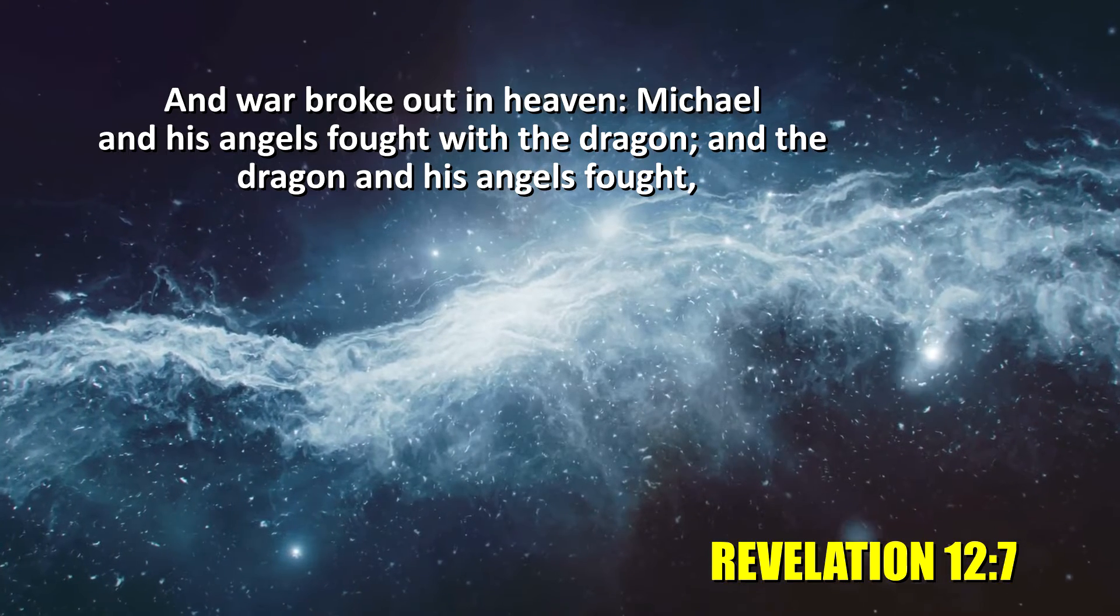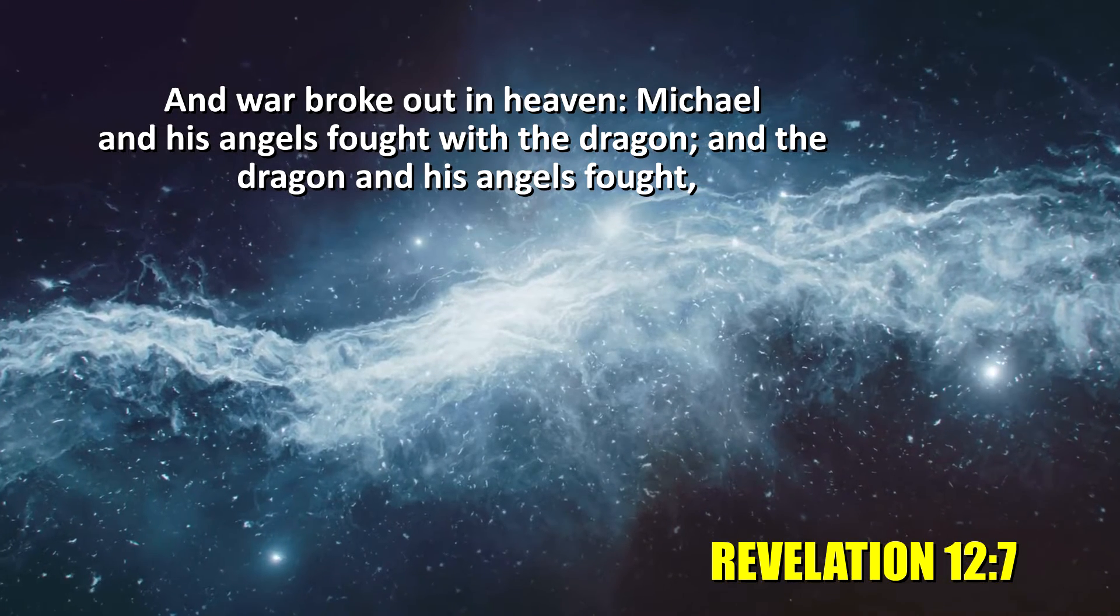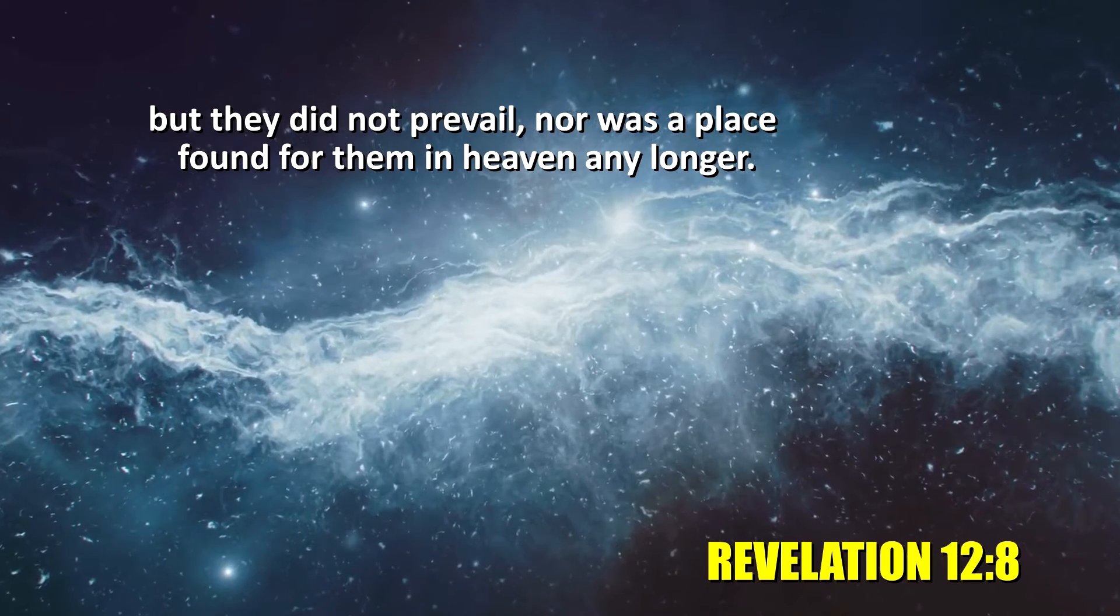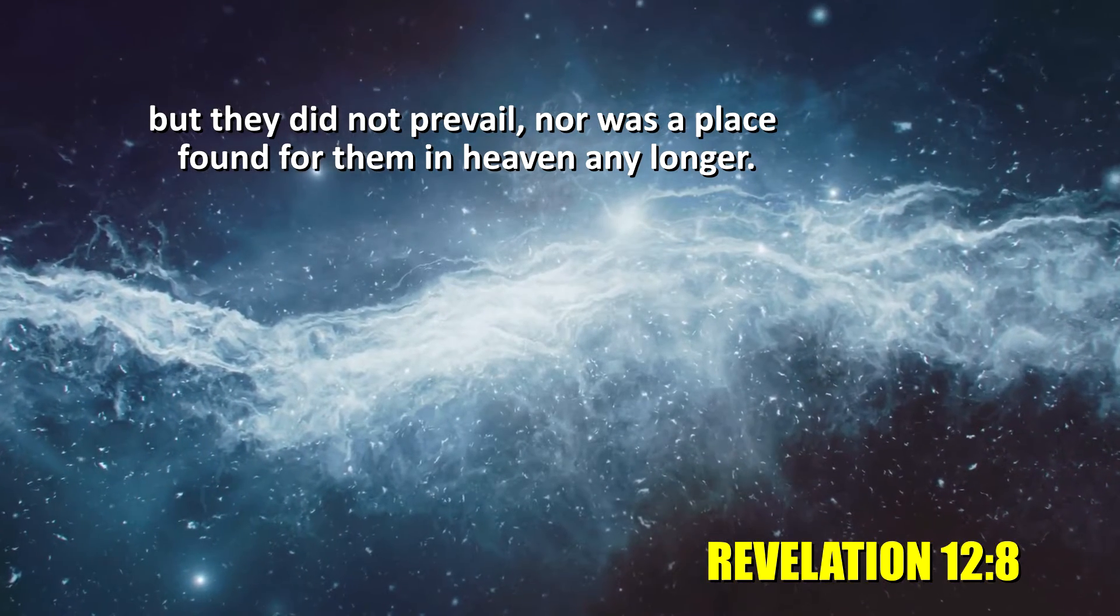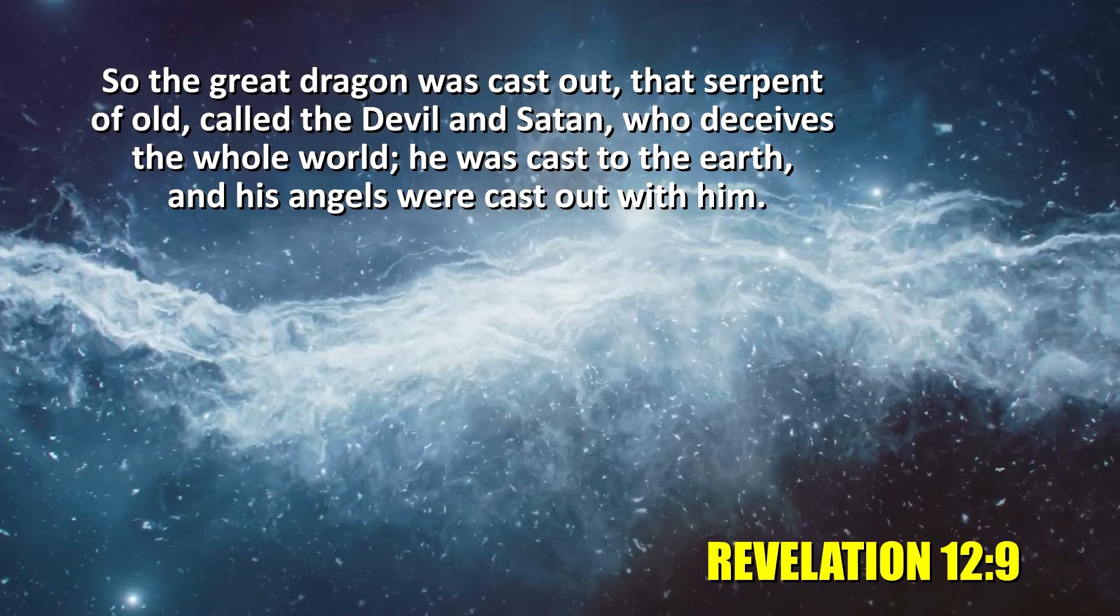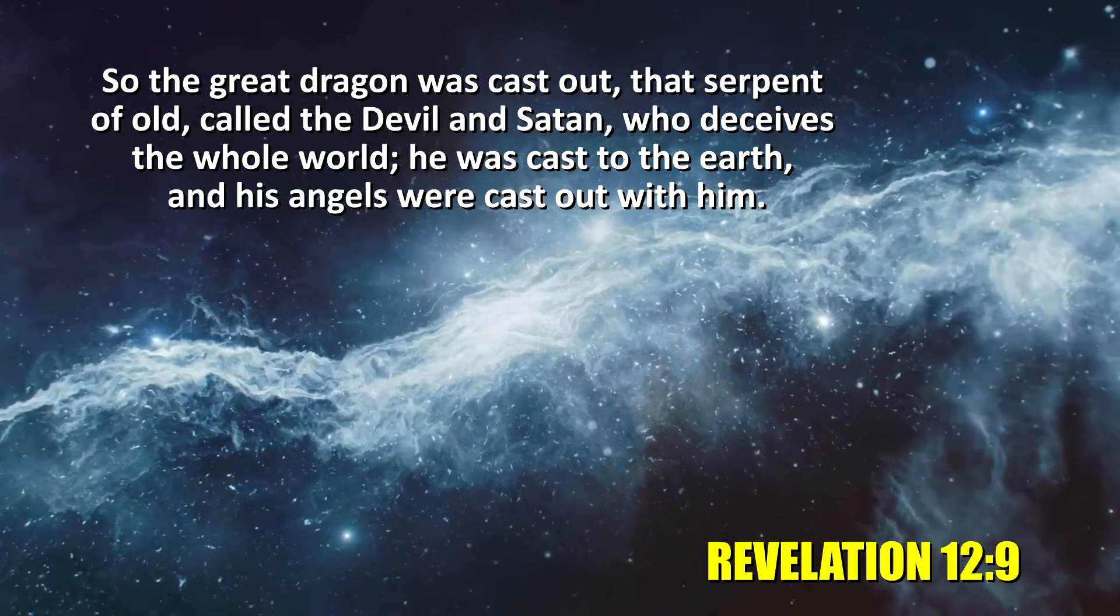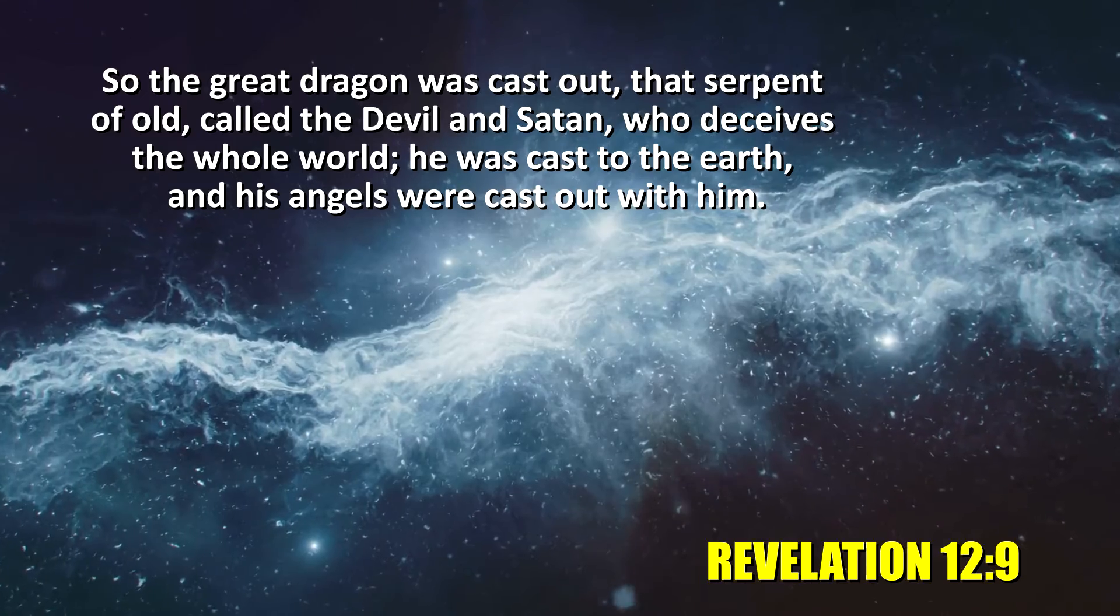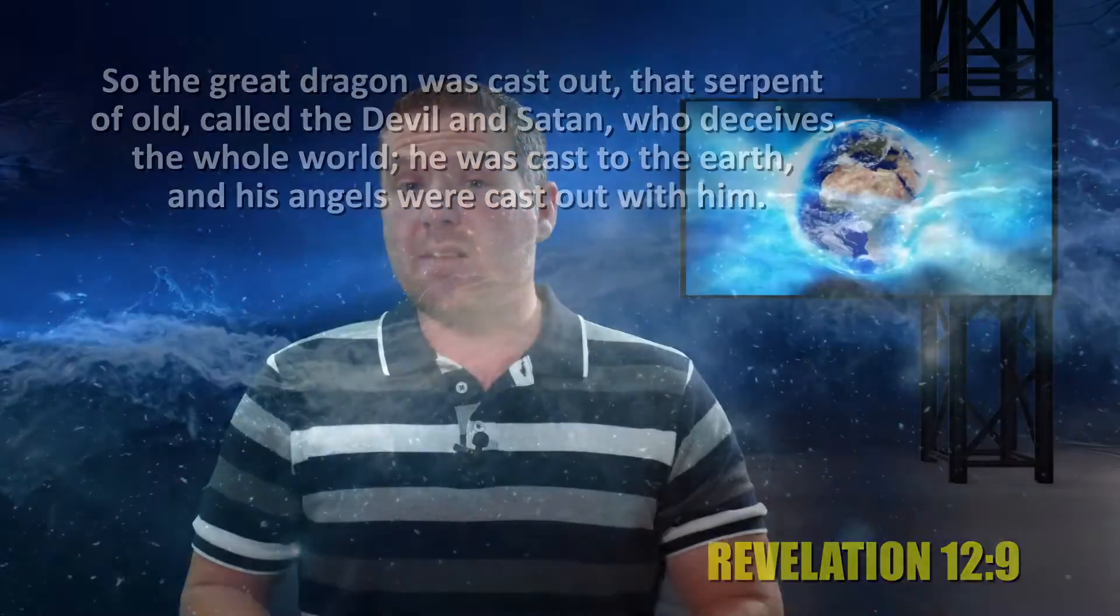Revelation chapter 12 verse 7 tells us how he was cast out of heaven. War broke out in heaven. Michael and his angels fought with the dragon, and the dragon and his angels fought. But they did not prevail, nor was a place found for them in heaven any longer. So the great dragon was cast out, that serpent of old called the devil and Satan, who deceives the whole world. He was cast to the earth, and his angels were cast out with him. So the devil was cast out before the earth was created.